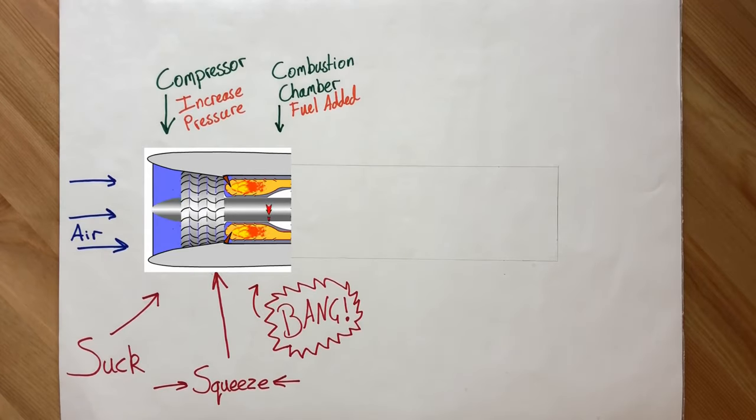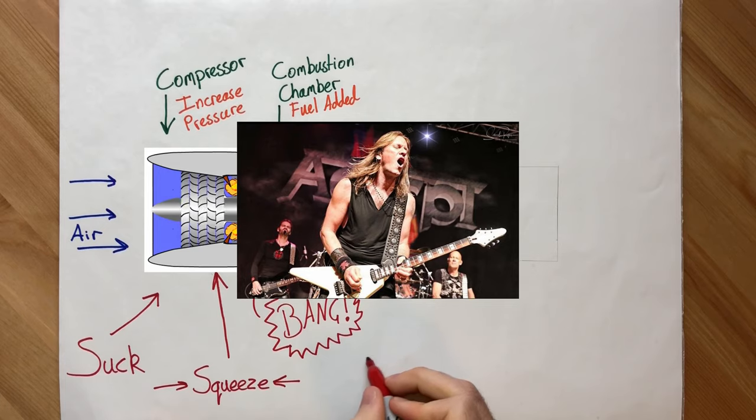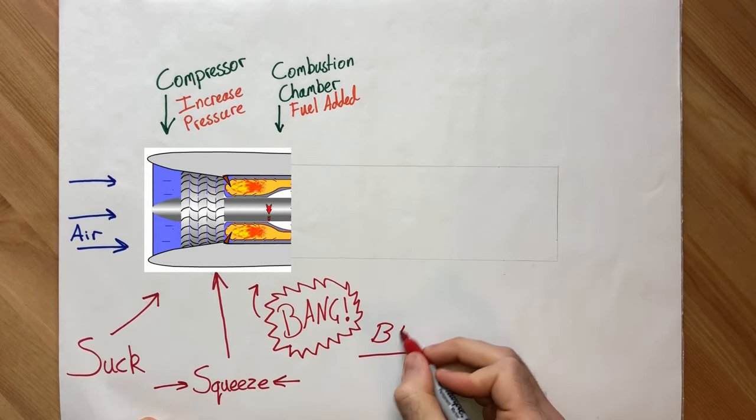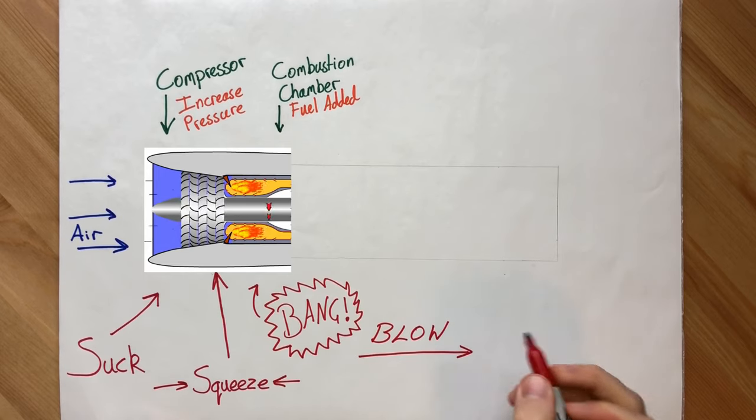However, a jet engine is made of metal and will not expand. So instead, the air must now rush out the back as fast as possible since it has nowhere else to go.